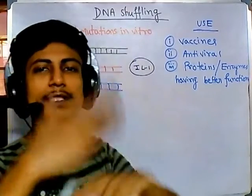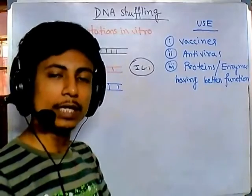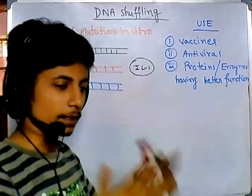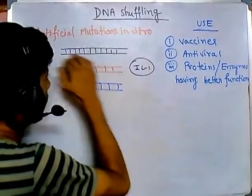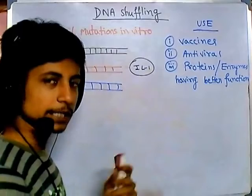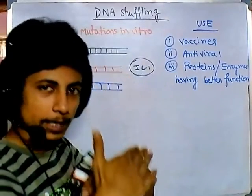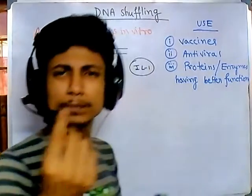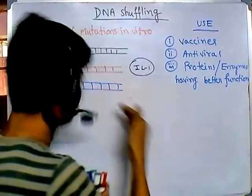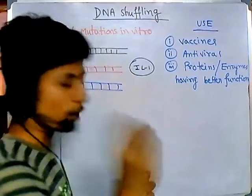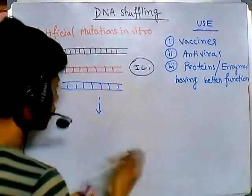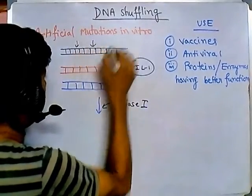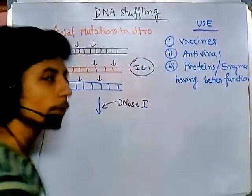Using these three homologous genes in vitro, we want to create a match-mismatch game using simple temperature variations, because DNA undergoes hybridization and unhybridization. We put all these homologous DNA sequences in vitro in a small PCR tube or Eppendorf tube, then treat them with an enzyme called DNase I. DNase I cleaves the DNA from different places — here, here, here — from different regions.